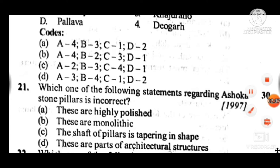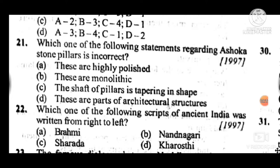Question 22: Which one of the following scripts of ancient India was written from right to left? The answer is D, Kharoshthi.